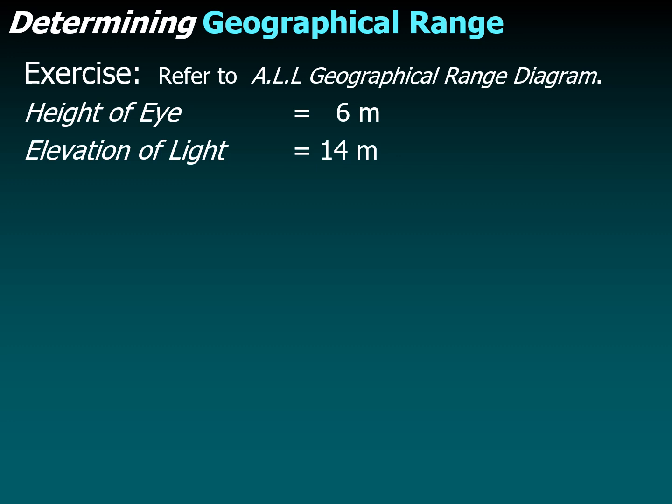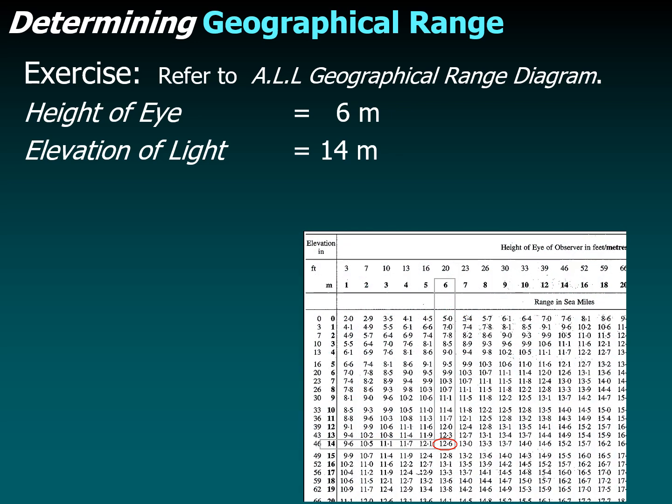Let's do an exercise to determine geographical range using the admiralty list of lights geographical range diagram, with a height of eye of 6 meters and an elevation of light of 14 meters. On the diagram, the horizontal column shows height of eye in meters — go below 6 meters vertically. The vertical column shows the elevation of the light in meters — intersect 14 meters elevation with 6 meters height of eye, and you get a geographical range of 12.6 nautical miles. You can pause here to study the diagram carefully.